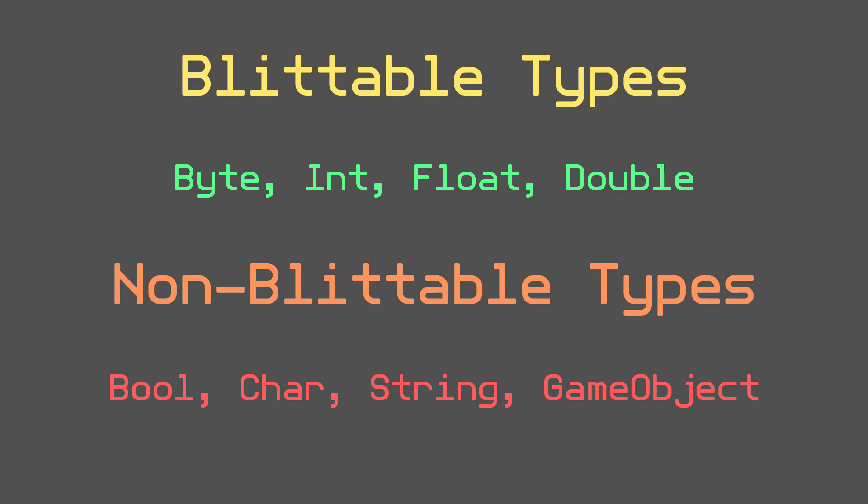Unity's engineers already thought of this and put in built-in safety measures. Instead of passing references to data into jobs, the job system passes a copy of the data. This is important because it means the data types we use must be blittable data types — essentially variable types that can be transferred between managed and unmanaged code. In C# and Unity we typically write managed code where Unity handles memory allocation and garbage collection, while unmanaged or native code works with direct memory access. By isolating copies of data to worker threads we avoid race conditions, but it makes syncing back to the main thread harder — which is why Unity created native containers.